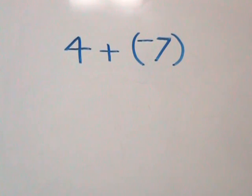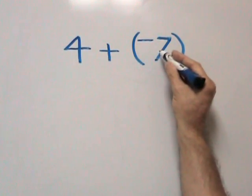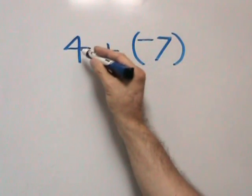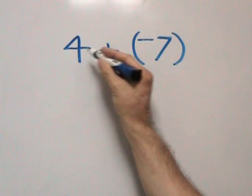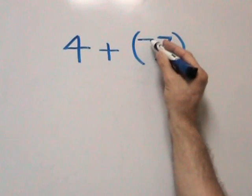On the board, we have the problem 4 plus negative 7. What we're doing here is we're taking a positive number and adding a negative number.